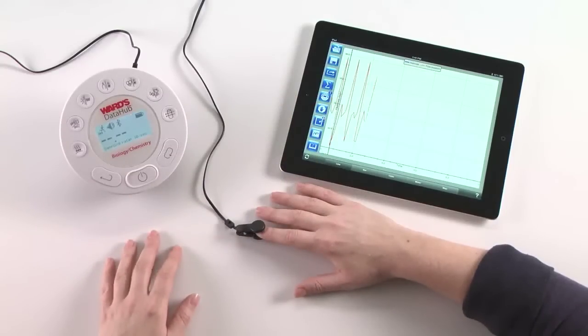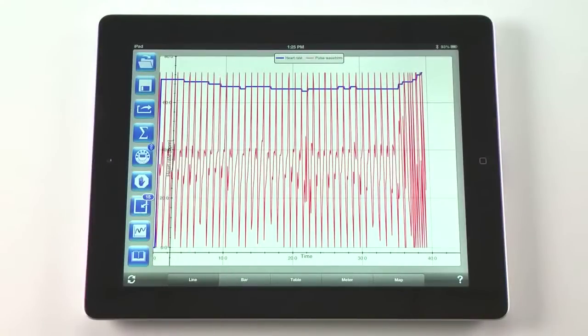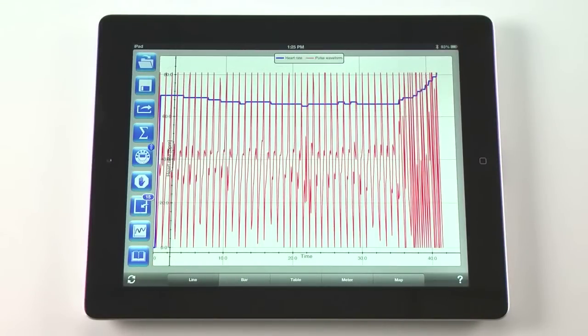We now have the student sit still without talking for 30 seconds. Now our student will do physical exercise for 30 seconds. Watch the live graph as it displays the change in heart rate.